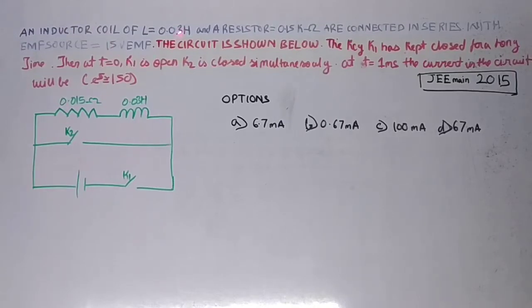The question says that an inductor coil of L equals 0.038 Henry and a resistor of 0.15 kilohm are connected in series with an EMF source of 15 volt. The circuit is shown below. The key K1 has been kept closed for a long time.